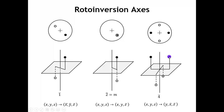The four-bar rotoinversion axis is shown here. We rotate by 90 and then invert — that takes us to a first point. Operating again: rotate by 90 and invert, creating a second point. The third operation — rotate by 90 and invert — gives a third point. The fourth operation returns us to the beginning. Repeatedly applying the four-bar axis just keeps generating those same four points. So the four-bar rotoinversion axis is a unique symmetry element that doesn't translate to any other kind of symmetry.